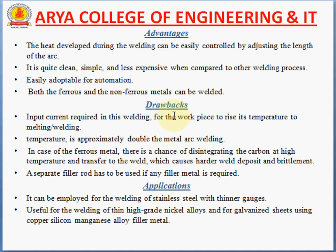Drawbacks of carbon arc welding: the input current required is very high, as the temperature ranges are 3900 degrees Celsius and 3200 degrees Celsius — approximately double that of metal arc welding. In the case of ferrous metals, there is a chance that carbon may dissociate at high temperature and transfer to the weld, causing harder weld deposits and brittleness. Also, a separate filler rod must be used if filler metal is required.